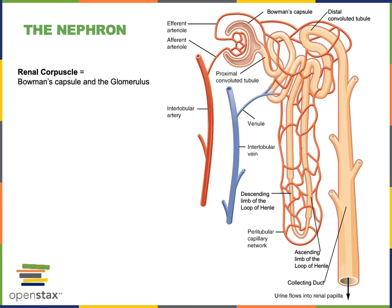The filtrate then flows into the proximal convoluted tubule. From there, liquid flows deep into the medulla down the descending limb of the loop of Henle, and then there is a hairpin turn before the filtrate flows back towards the cortex in the ascending limb of the loop of Henle. The liquid from the ascending limb then flows into the distal convoluted tubule, and the distal convoluted tubules of all nephrons drain into collecting ducts.